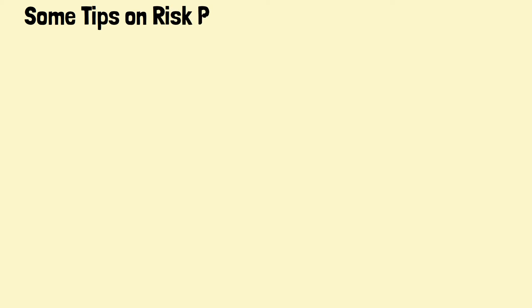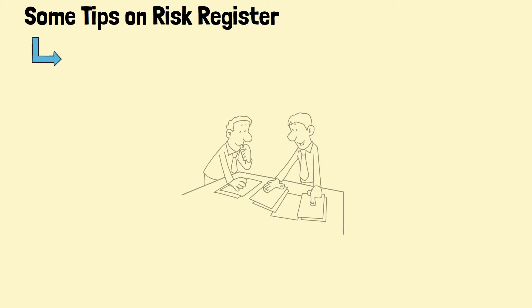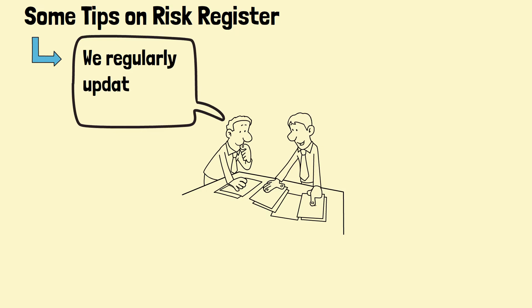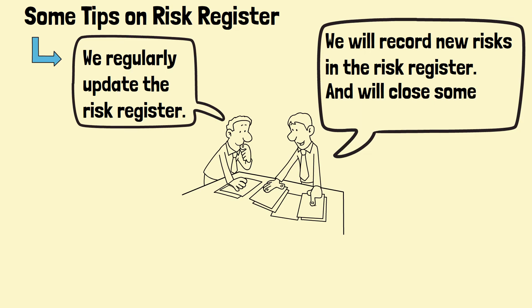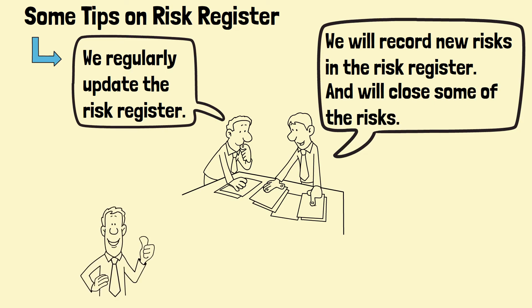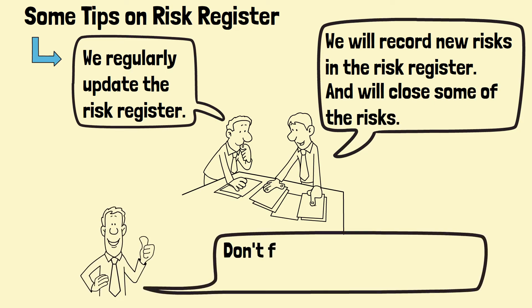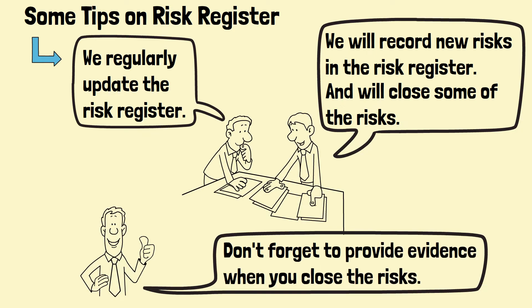Preparing a risk register cannot be viewed as a one-off exercise. It should be treated as a live repository and updated regularly. When a new threat or opportunity is identified, it should be recorded in the risk register. Also, when a risk is closed, its status should be updated as well. Evidence must be provided in the audit trail column to support the closure of the risk.